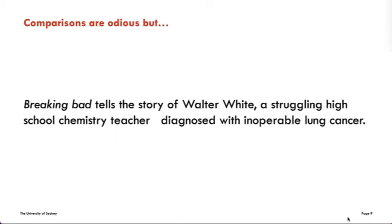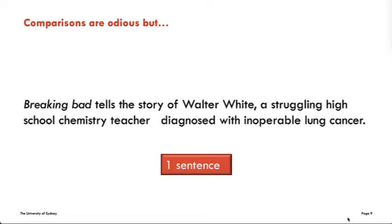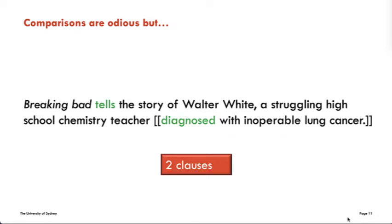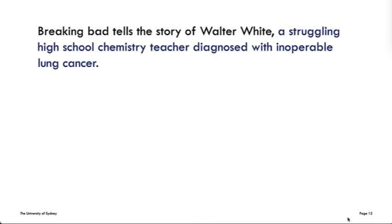In comparison, Text B is only one sentence, one full stop. It contains two clauses because there are two verbal groups: tells and diagnosed. This clause is expanding the information about the chemistry teacher. We call it an embedded clause.